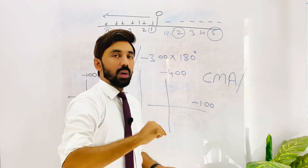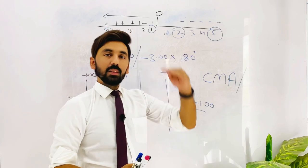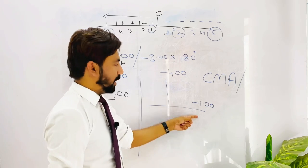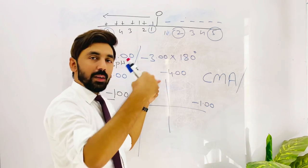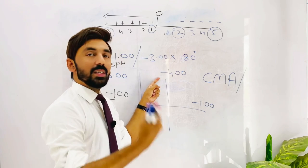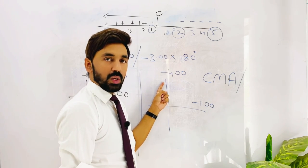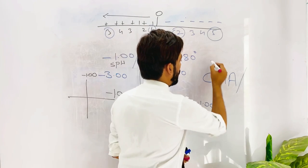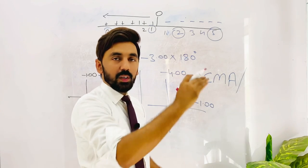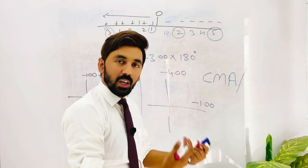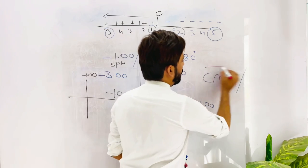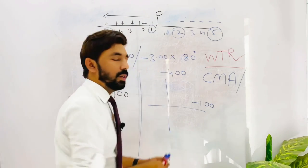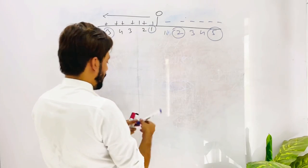Now for with-the-rule or against-the-rule: using the rule of thumb, higher the myopia higher the power. Minus four is greater value than minus one, so minus four carries more power. The 90-degree vertical meridian carries more power and is more steep. Since the vertical meridian is more steep and curved, this is again with-the-rule astigmatism. Final answer: compound myopic with-the-rule astigmatism.